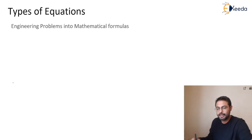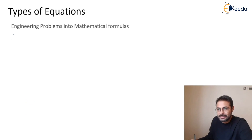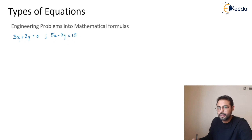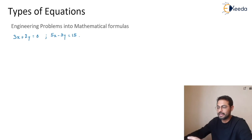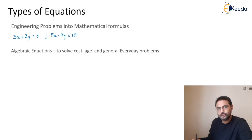Any engineering problem can be converted into mathematical formulas. You might have seen formulas like this. These formulas are known as algebraic formulas and these algebraic formulas are used to solve various problems like age-related problems, predicting some cost, or any other general terms in day-to-day life. But what if some physical phenomena is changing over time? That thing is known as a derivative.